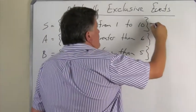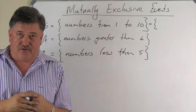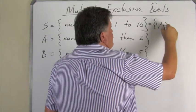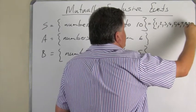So first of all, let's just write down all these outcomes. So these are 1, 2, 3, 4, 5, 6, 7, 8, 9, and 10.